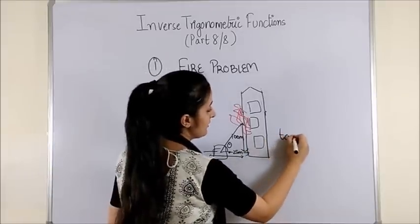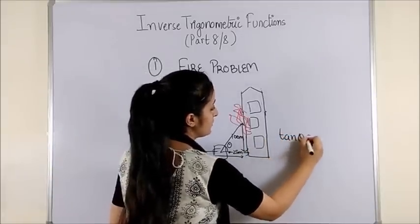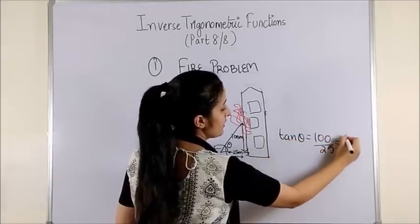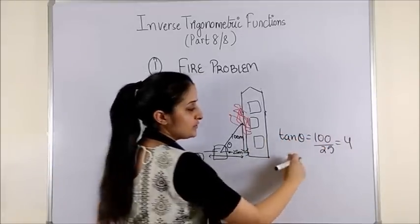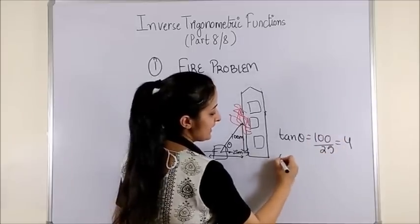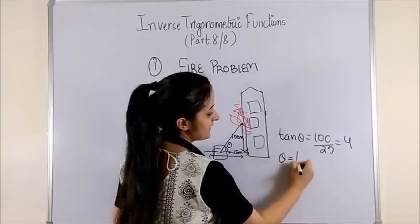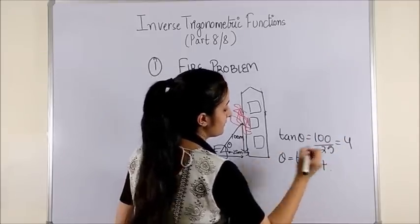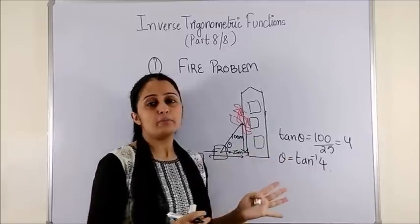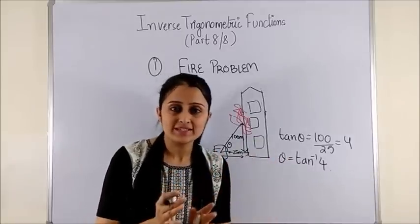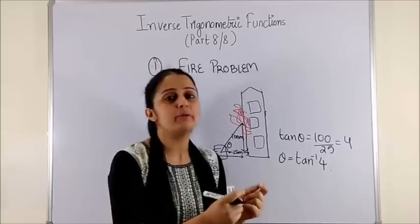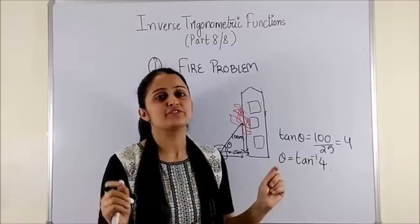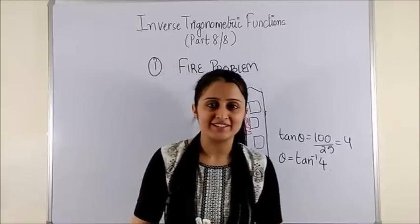Making a trigonometric triangle, let's say this angle is theta. Tan of theta gives us 100 over 25, which is 4. Taking tan inverse on both sides, you get theta equals tan inverse of 4. Once the fire person knows this angle, they hold the pipe at the correct position and extinguish the fire immediately.